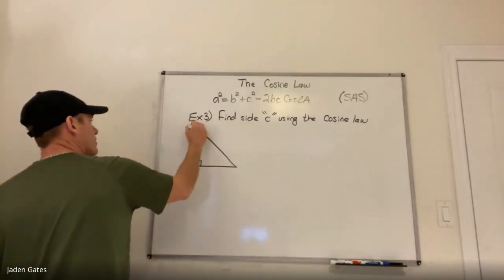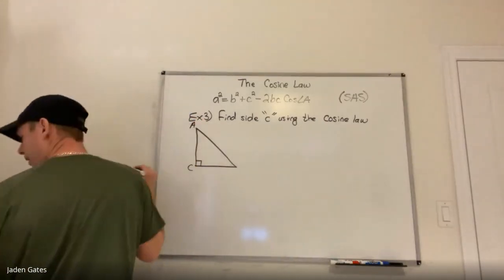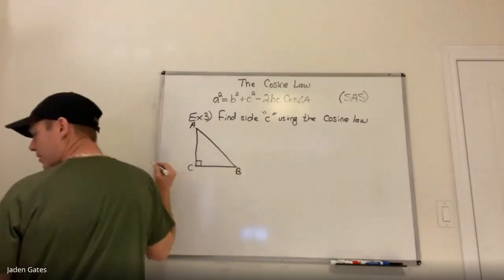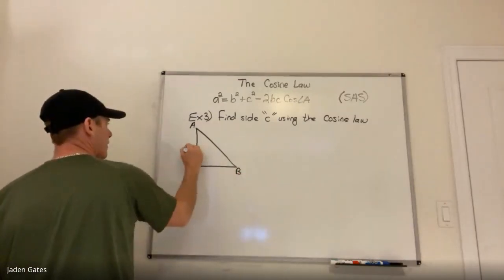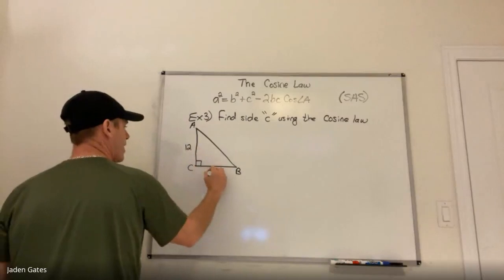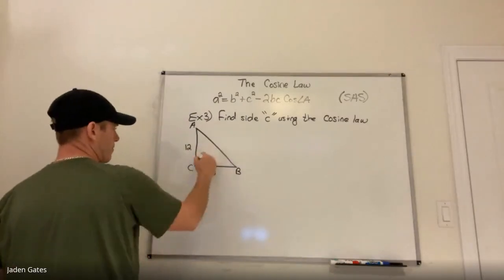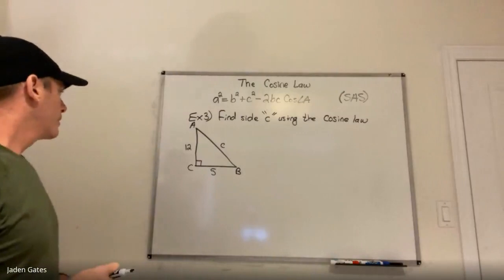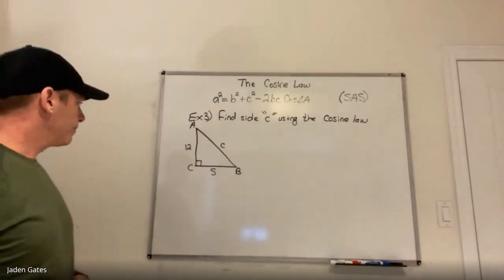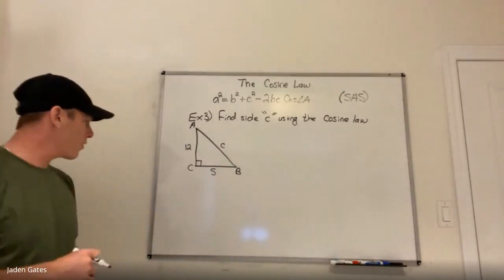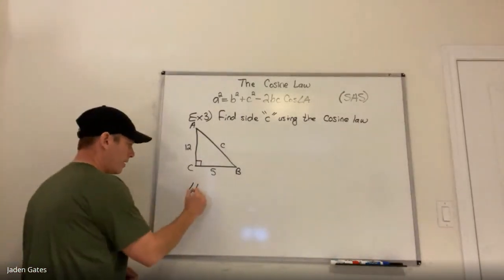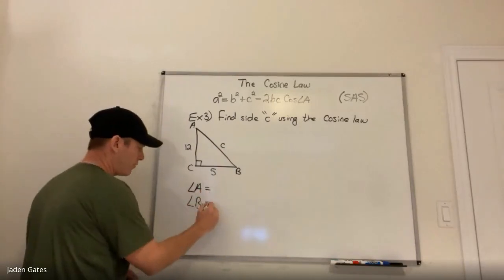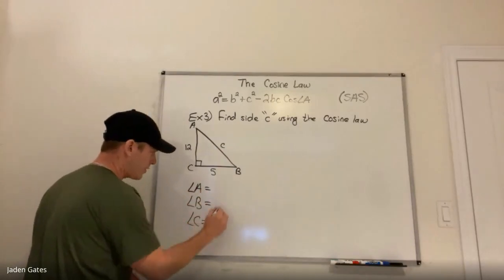I'm going to call the vertices A, C, and B. I have a 12 here and a 5 here, and across from angle C would be side c. Writing down my three angles and three sides.